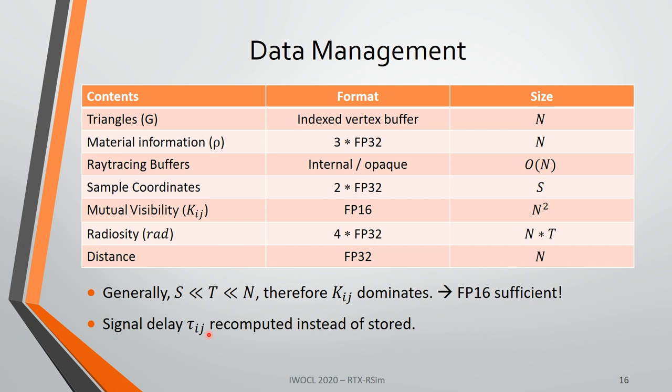You might have noticed that the signal delay tau_ij for individual triangle pairs is not mentioned here, even though it was described earlier in the algorithm. For the GPU implementation, we decided to recompute this instead of storing it, which both saves a lot of space and is actually faster, because computing tau_ij requires very little effort compared to performing a global memory lookup.